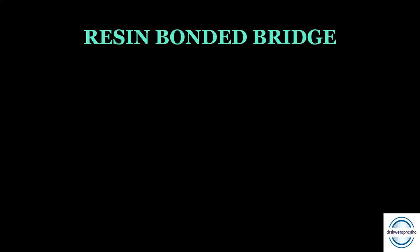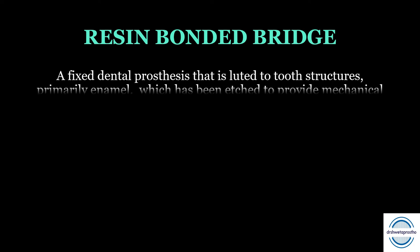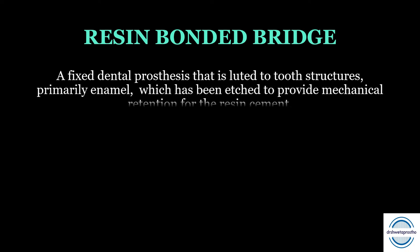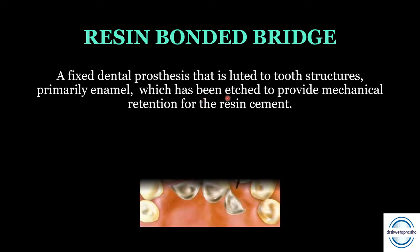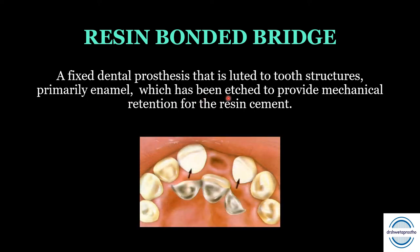The definition of a resin bonded bridge: a resin bonded prosthesis or bridge is a fixed dental prosthesis which is luted to the tooth structure, primarily enamel. The reduction is within the enamel, which has been etched to provide mechanical retention for the resin cement.